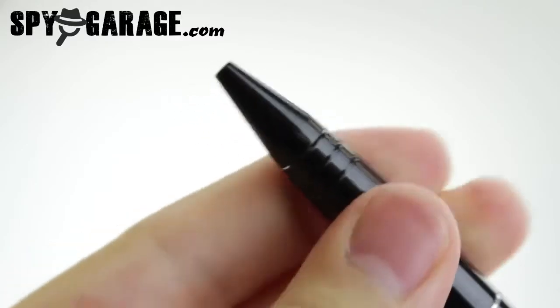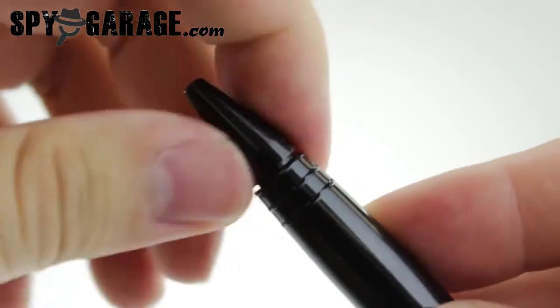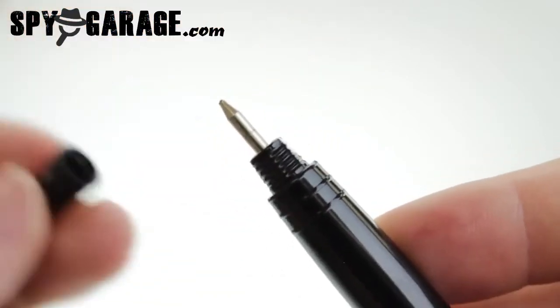Twist the pen at the tip to expose the ballpoint pen, capable of writing like any ordinary pen. Unscrew the top to access the pen cartridge in case it ever needs replacing.